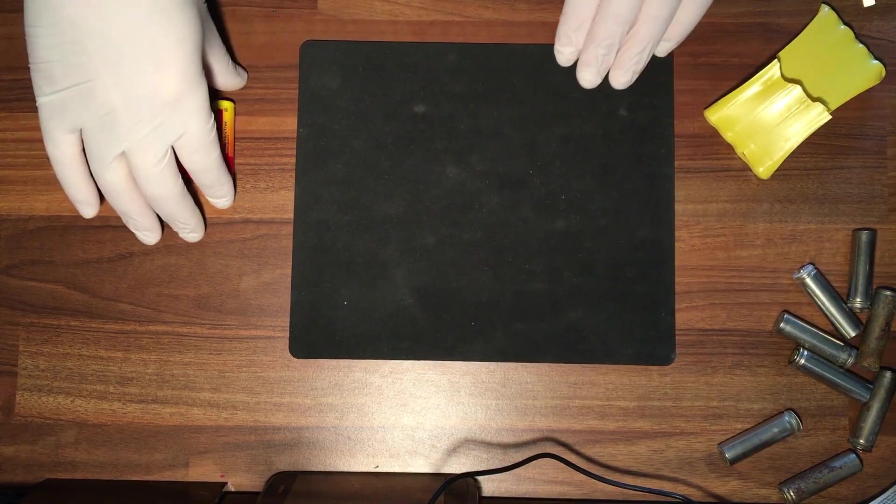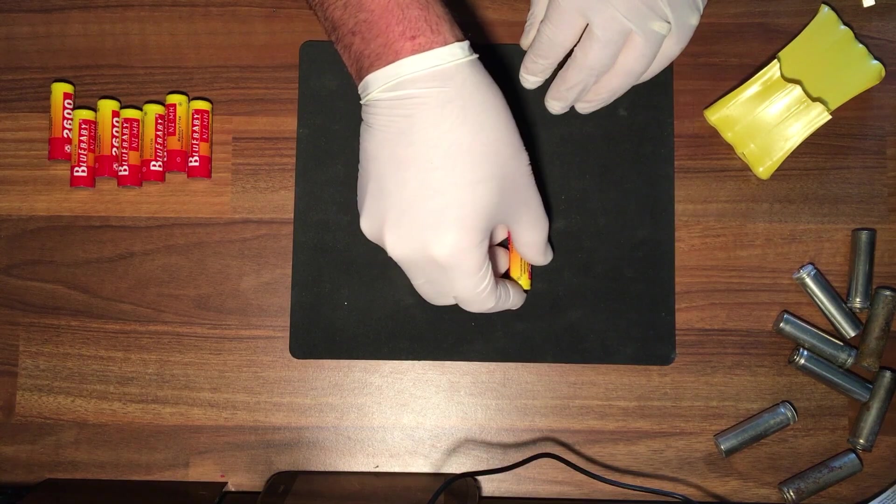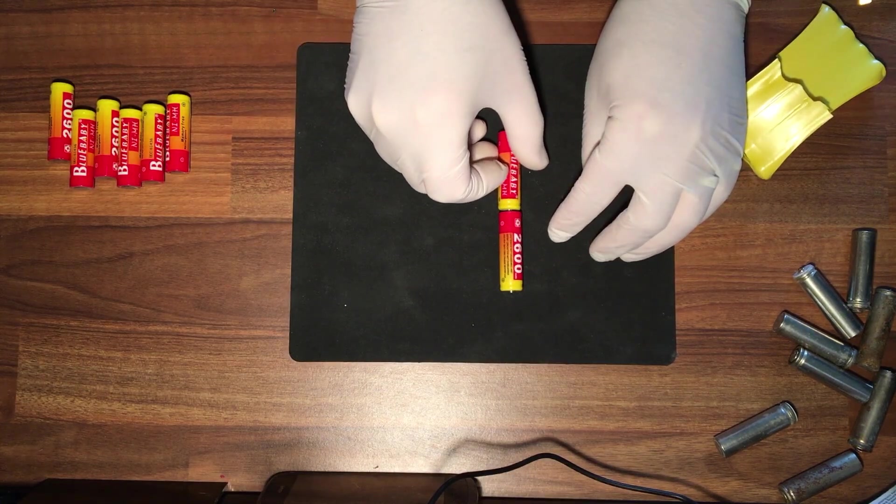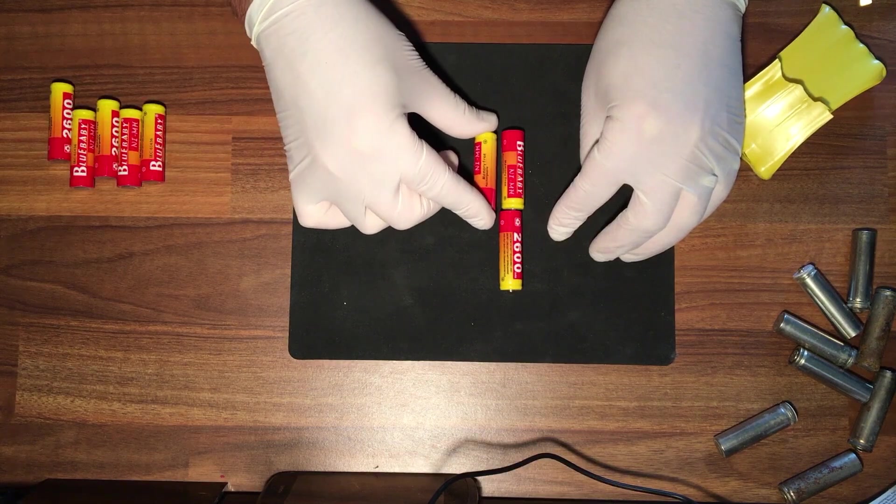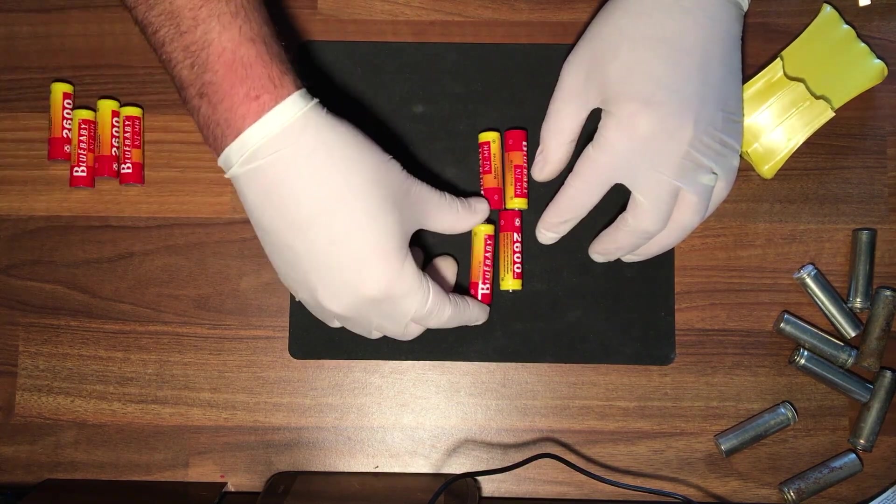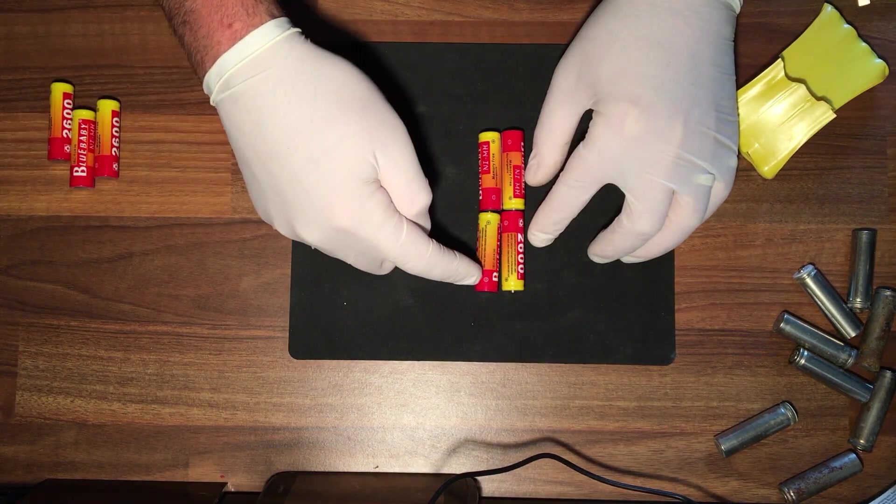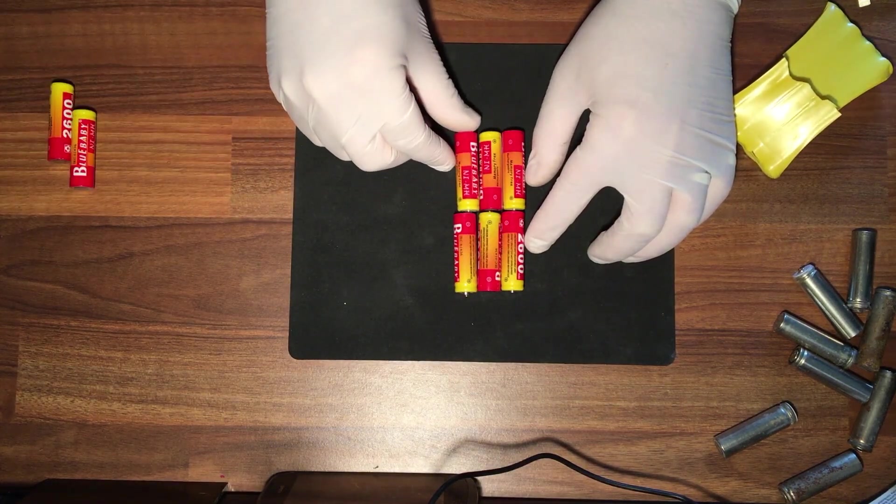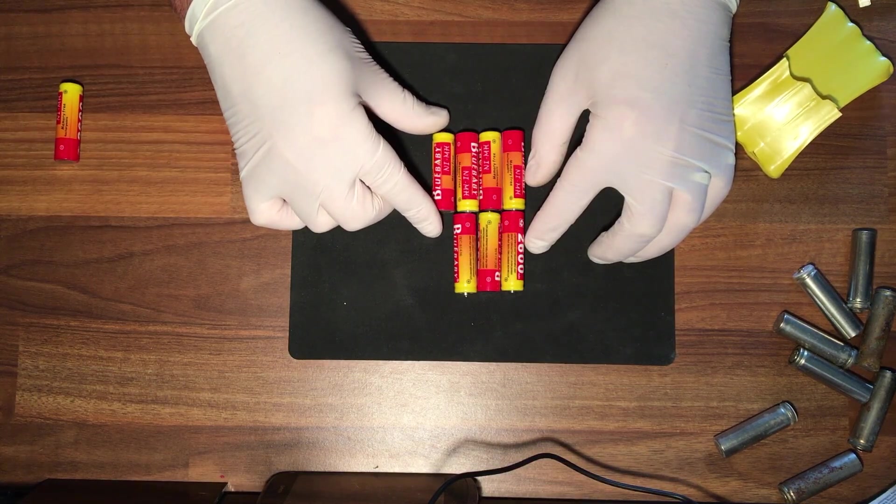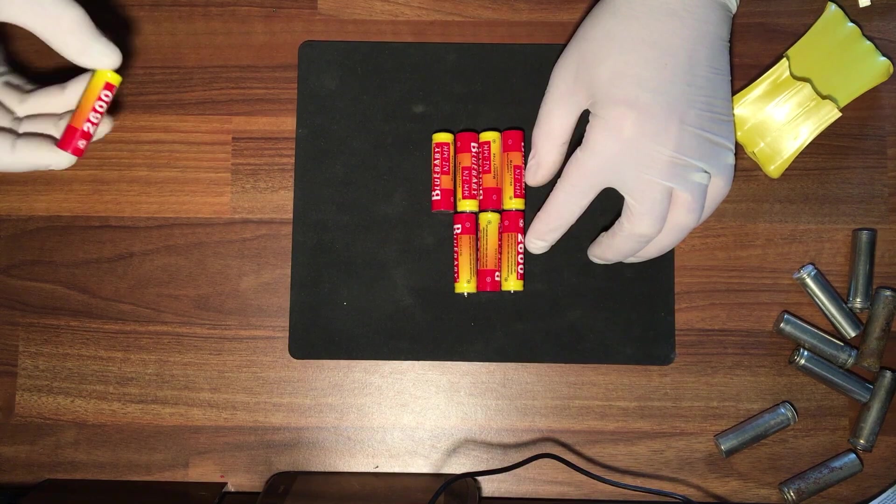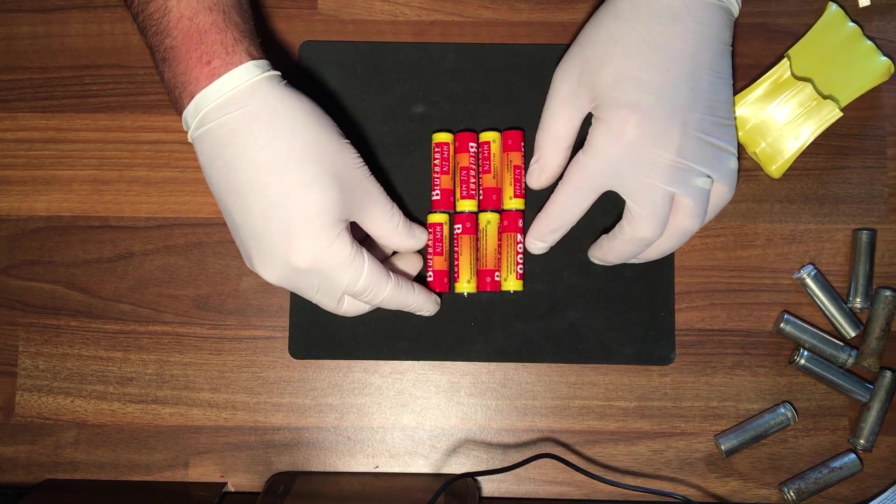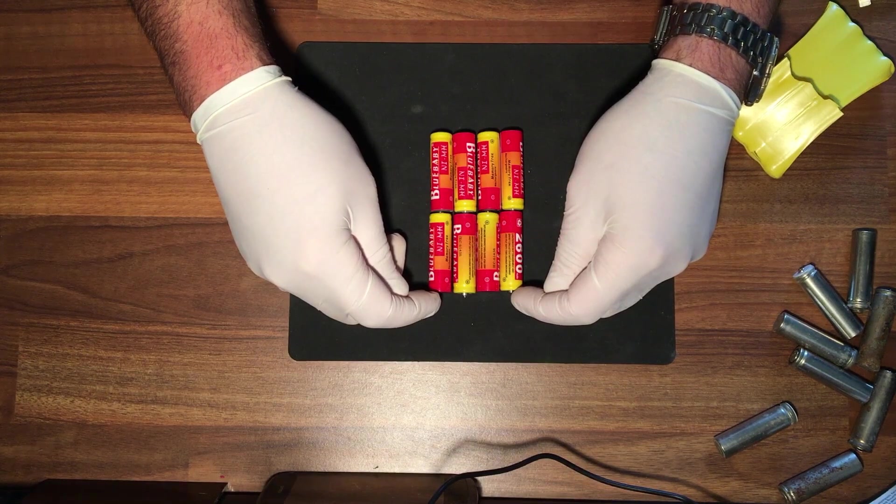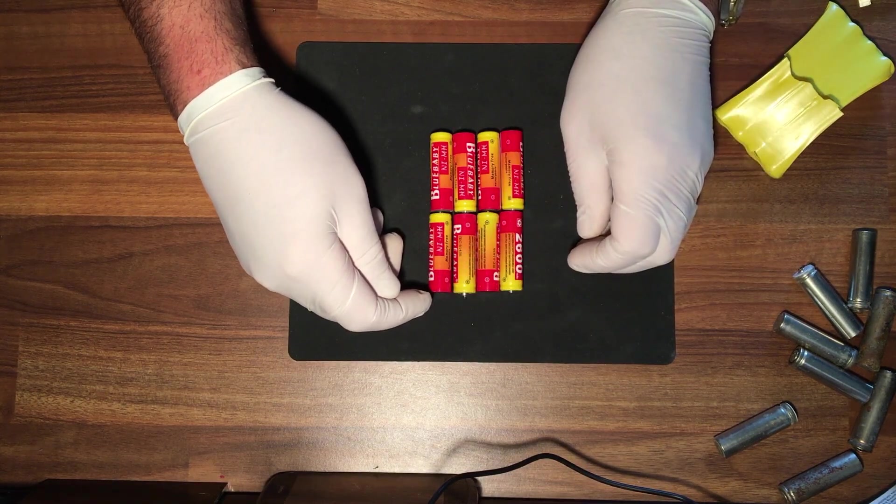These are the replacement batteries. Now the configuration again would be plus to minus, plus to minus, then it would come across here and it would be plus to minus, plus to minus. So we have minus up here follows on to plus to minus, plus to minus and so on. The connection lead will go from the plus here and the minus here across to the connection for the RC.